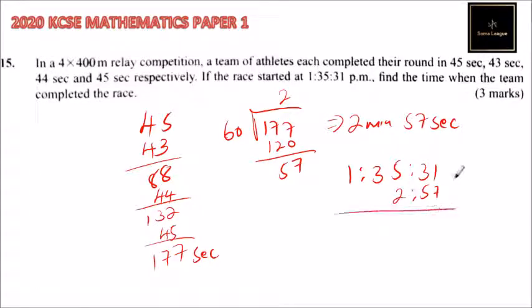So if you add up the time, this will be 58 seconds. So you minus 60, you have 28. So you carry 1 second there. So you add to this, you have 8, then you have 3, and you have 1. So it means the team completed the race at 1:38 minutes and 28 seconds.